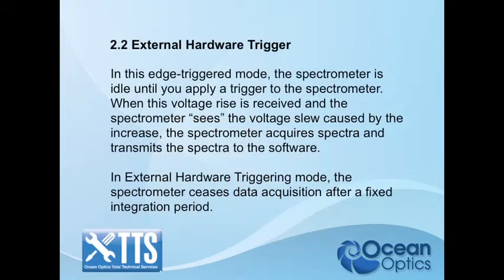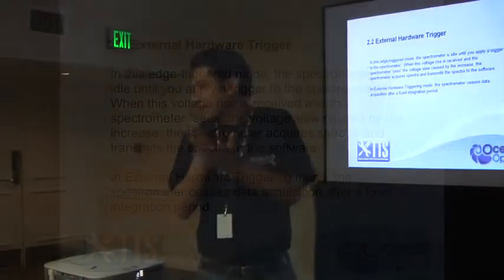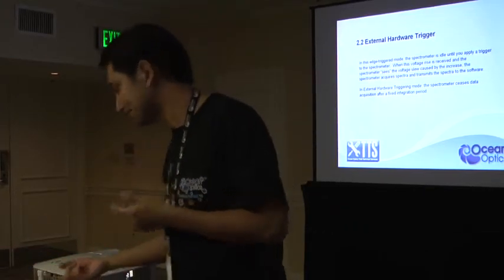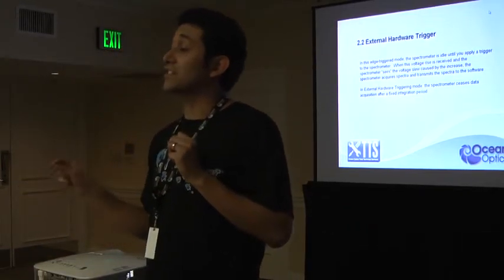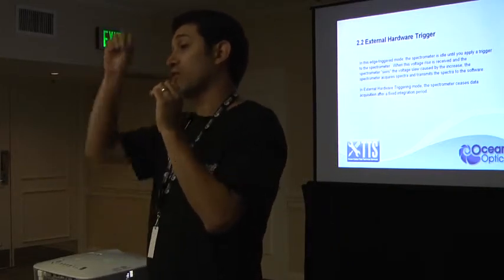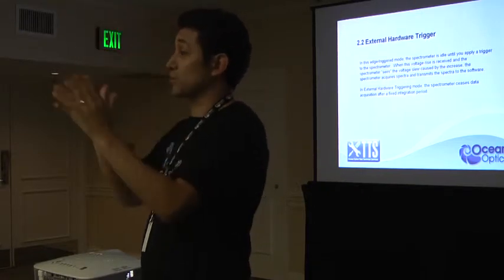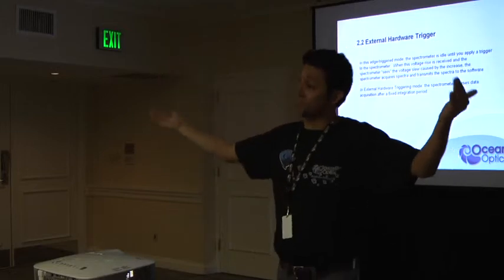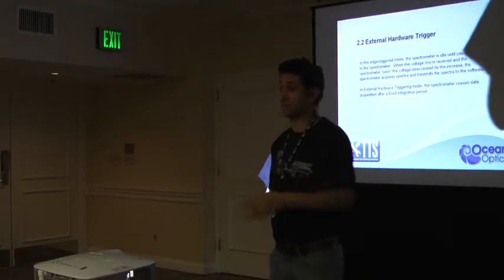External hardware trigger — this is an actual real trigger. In this mode, the spectrometer is completely frozen; it's not doing anything, just waiting for you to send the TTL signal. If you want to do very precise, time-critical acquisition, you use this mode. This is a rising edge trigger — every time you send a transition from zero to five volts, it acquires a new spectrum. If you need a hundred acquisitions, you need to send a hundred of those pulses.